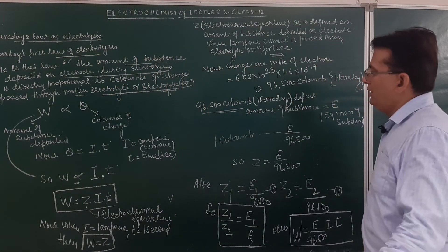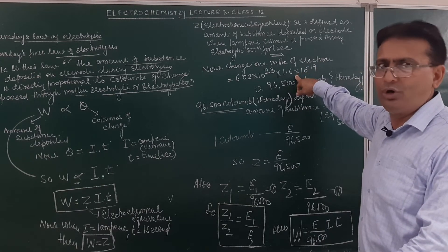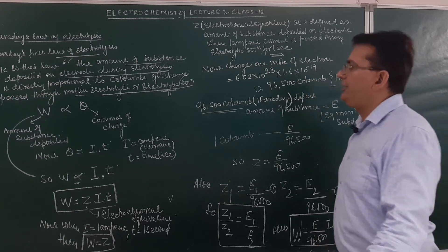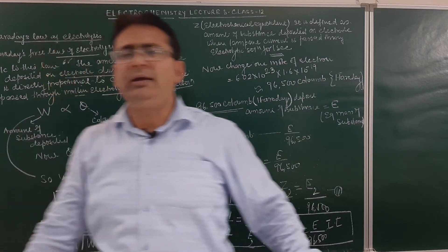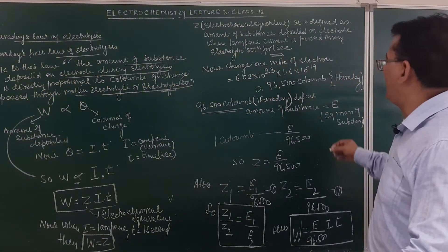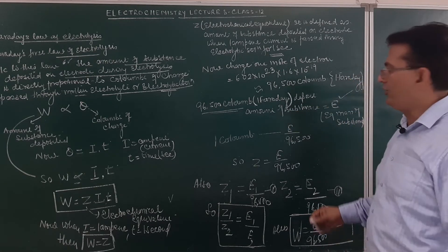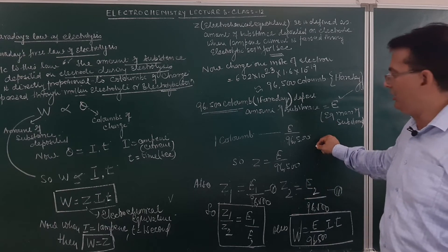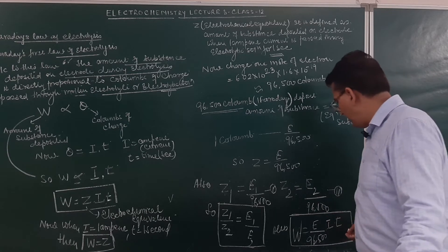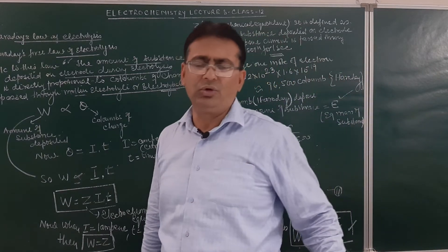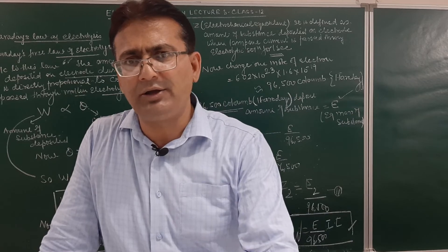The definition of electrochemical equivalent is now clear. One Faraday is the charge carried by one mole of electrons, and 96500 coulombs deposits the equivalent mass E of the substance. So Z = E/96500, and W = (E/96500) × I × T. I think Faraday's first law must be very clear to you.